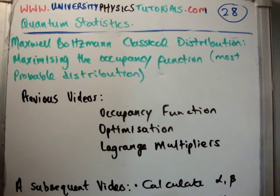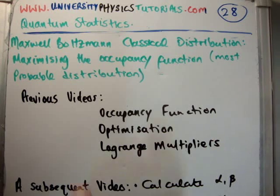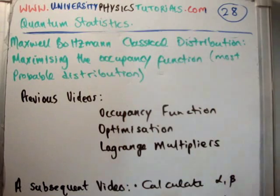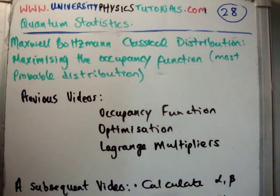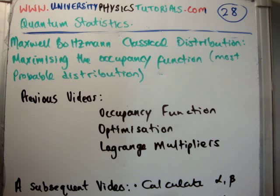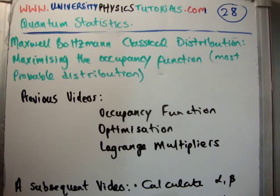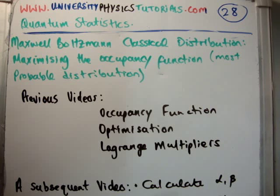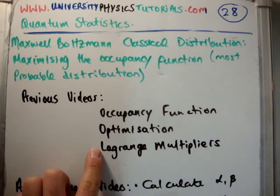Now this won't be in a form yet which you will recognize, but don't worry, we'll get there. I'd also like to note that I now have a website, universityofphysicstutorials.com. The previous video to this I'd like you to have seen is where I discussed the occupancy function for Maxwell-Boltzmann or classical particles, where I discussed optimization and the method of Lagrange multipliers. That's a very important one — at the very most you should have seen that.